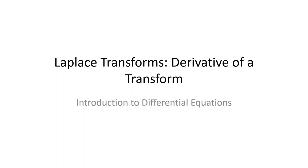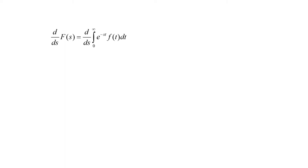In this lecture we're going to continue talking about the Laplace transform, and specifically we're going to talk about taking the derivative of a Laplace transform. So let's think about taking the derivative of a Laplace transform. The first derivative with respect to s of F(s) — the Laplace transform of f — is going to equal the derivative with respect to s of the integral from zero to infinity of e to the negative st times f(t) dt. That's if we replace the Laplace transform with its formal definition.